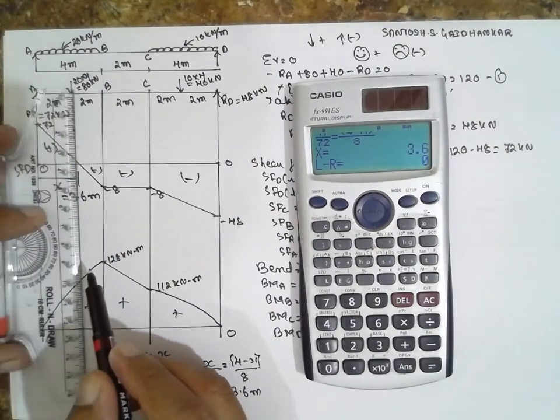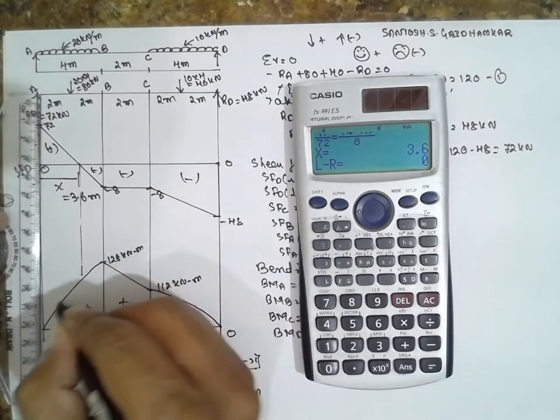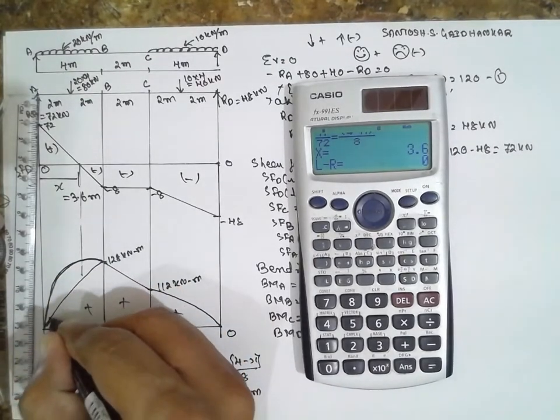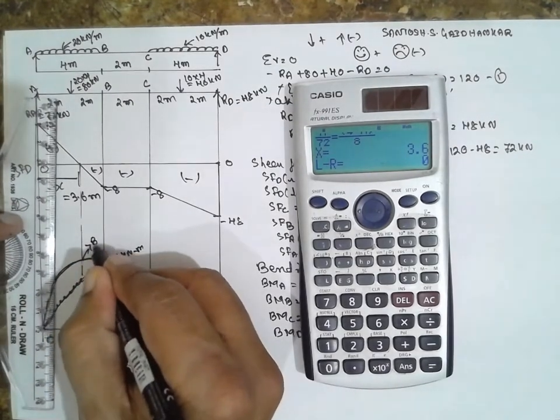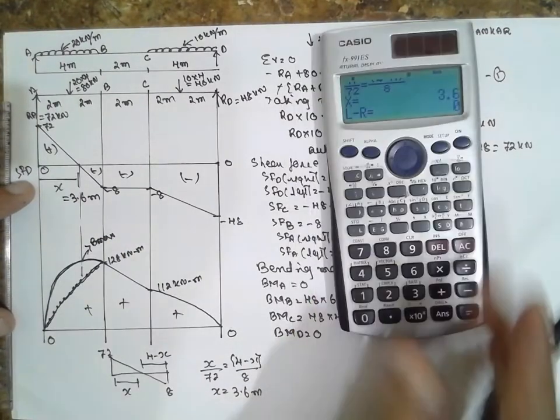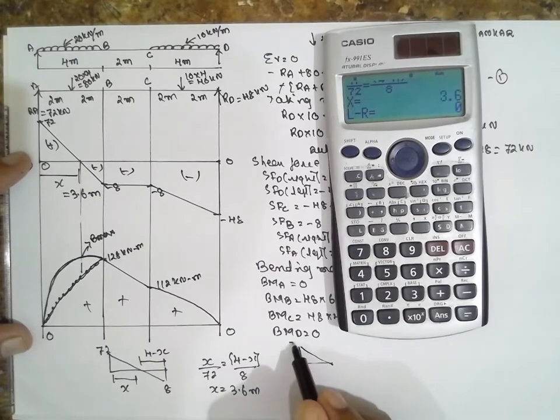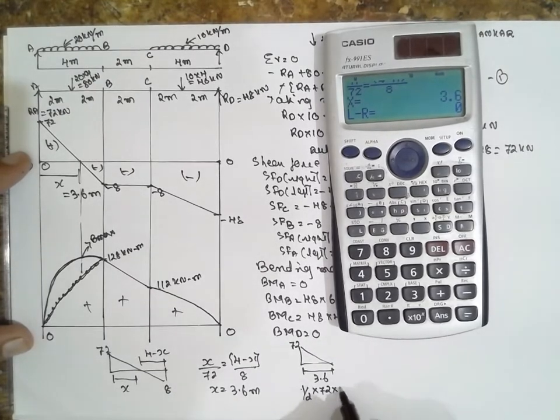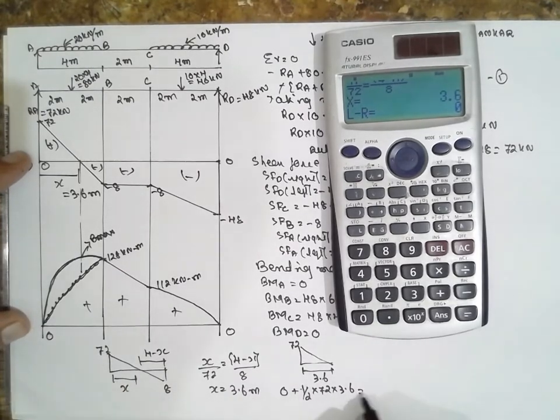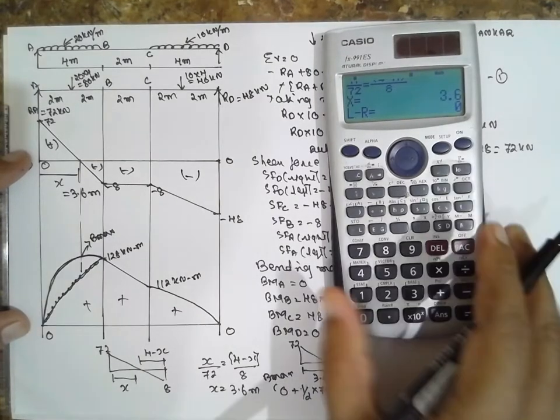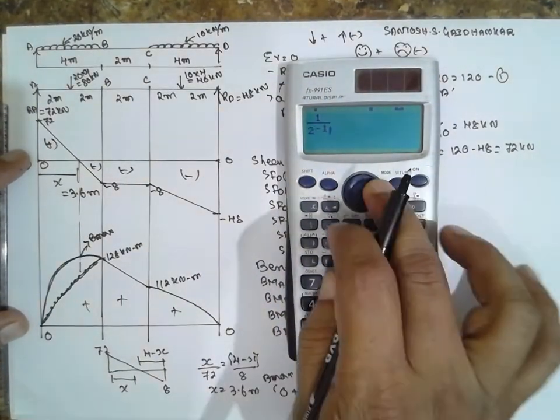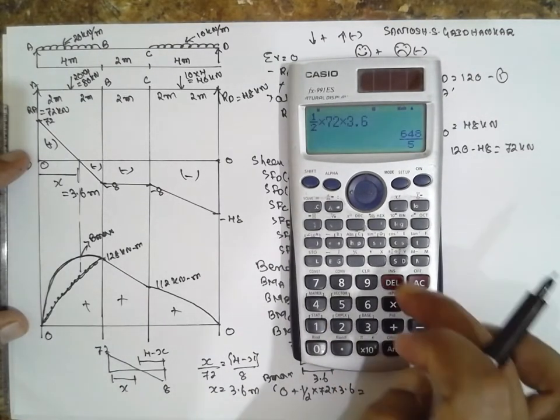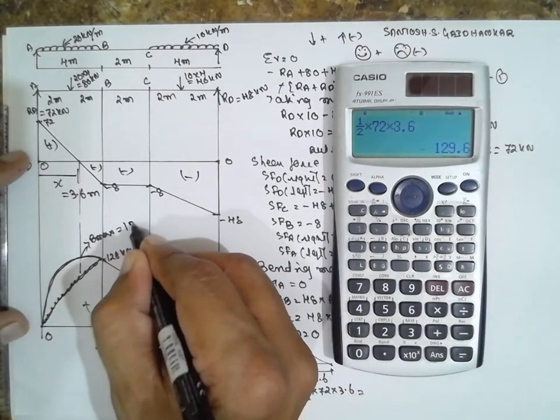Now find out the maximum value. It should be a little bit curve, okay? Don't copy, little bit curve. It should be maximum value, B max. Just find out the area, area of this part. Only you have to find out the area: 1 by 2 into base into height, into 72 into 3.6 plus 0. The previous value will be 0. 1 by 2 into 72 into 3.6 equals 129.6 kilonewton meter.